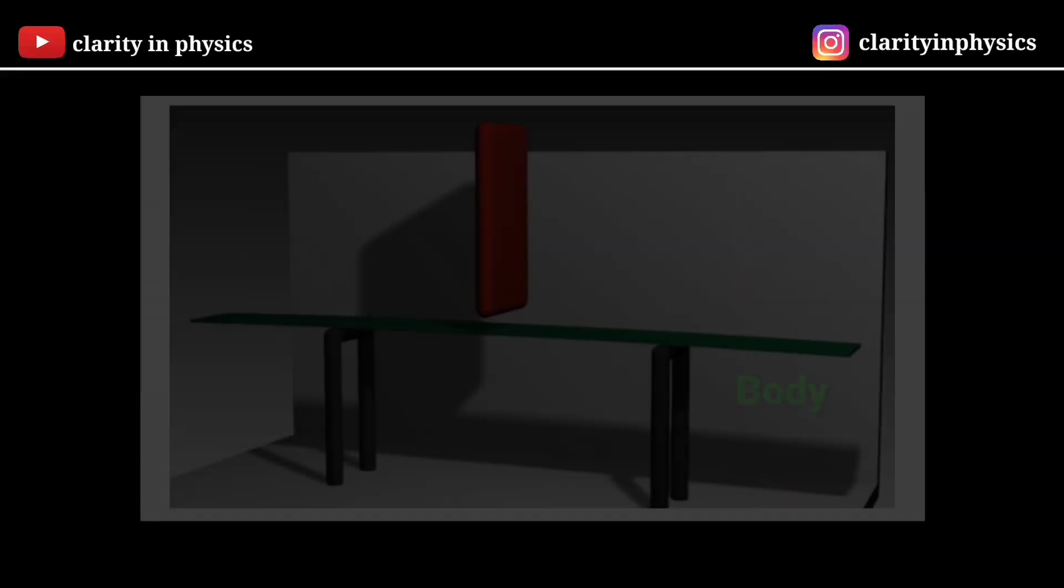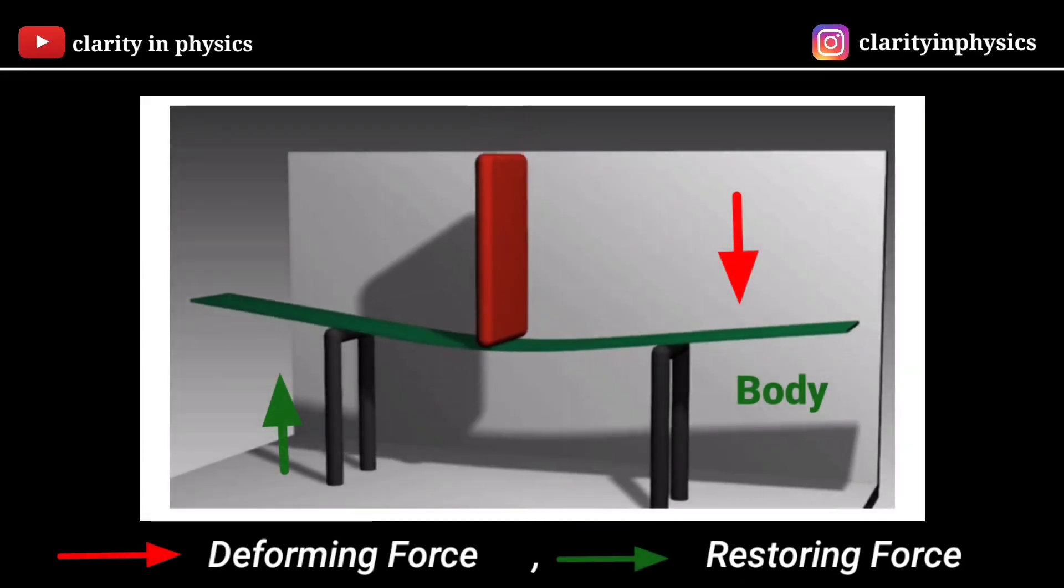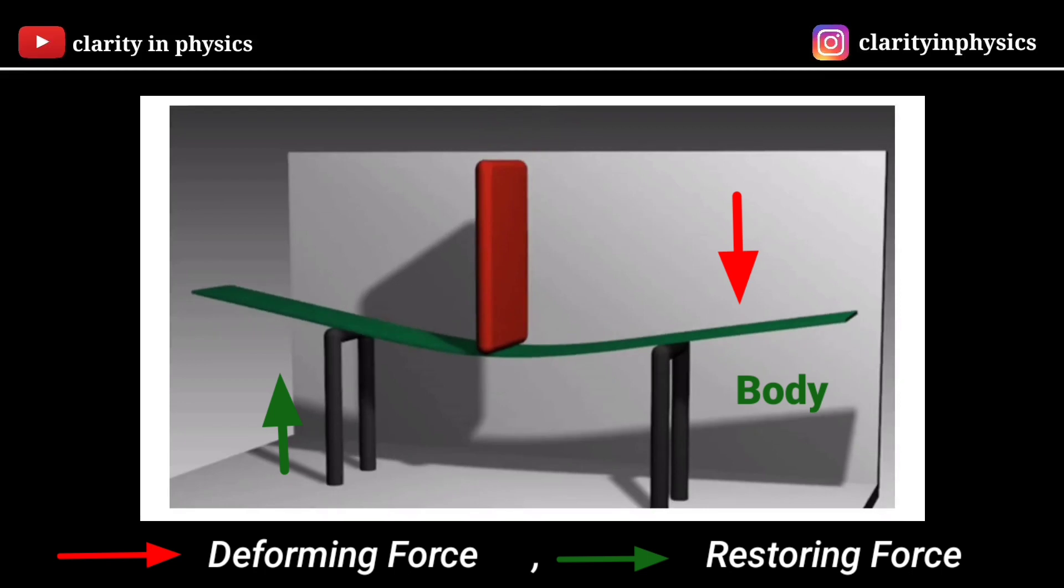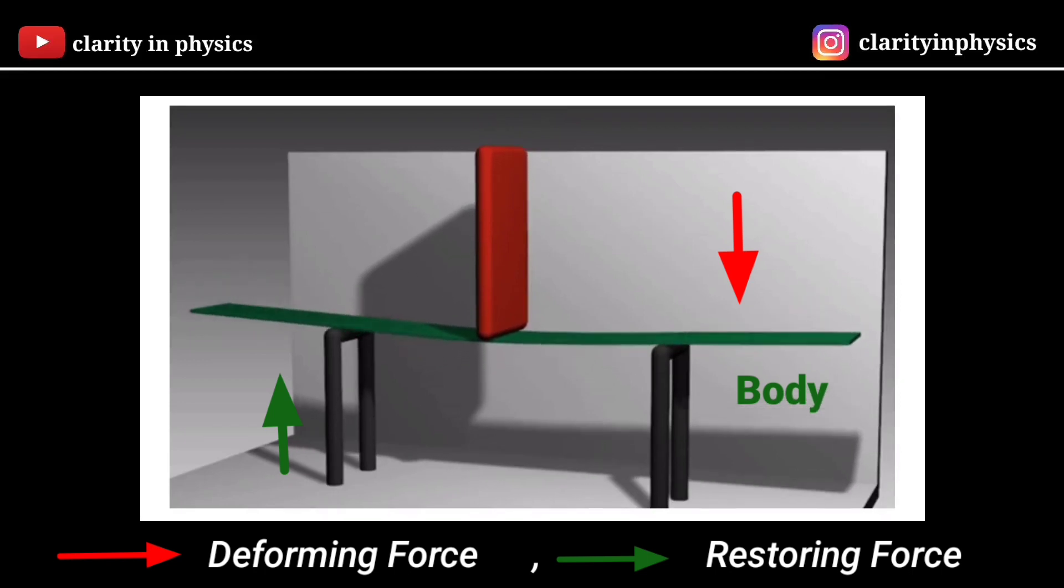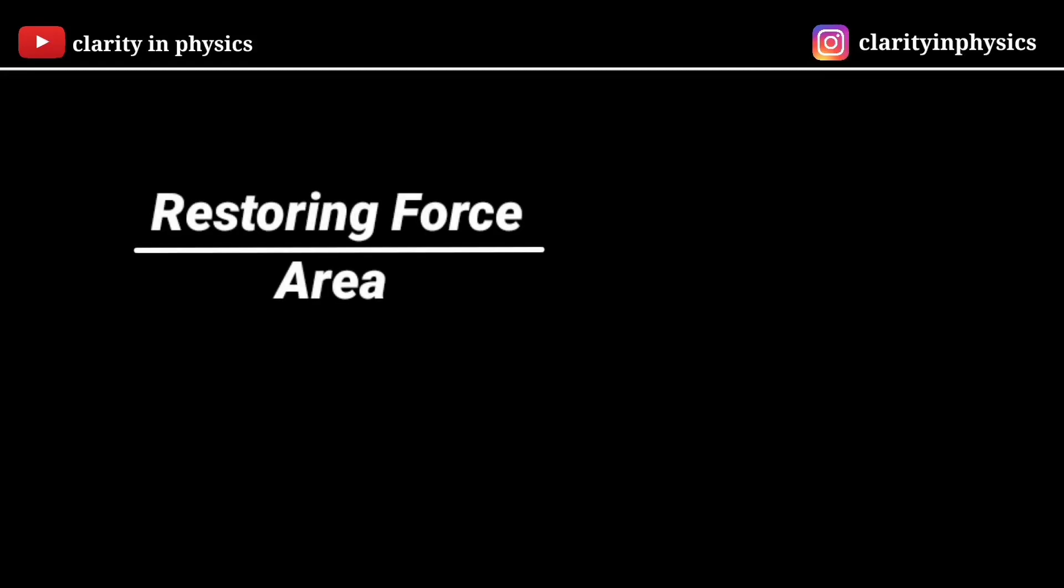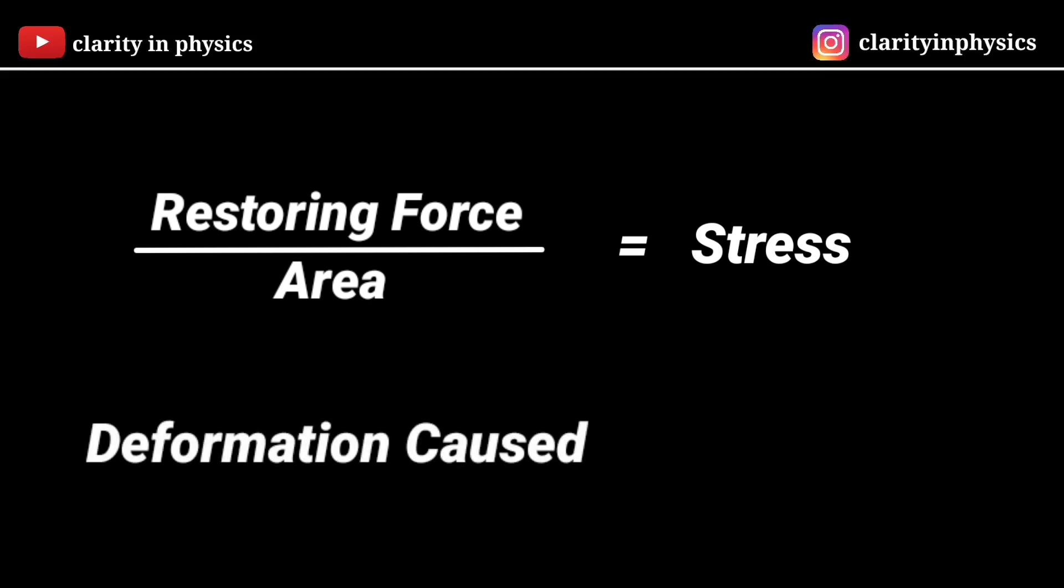When a body is subjected to a deforming force, a restoring force is developed in the body which is equal in magnitude but opposite in direction to the applied force. This restoring force per unit area is known as stress and the deformation caused is known as strain.